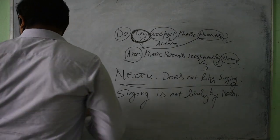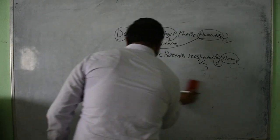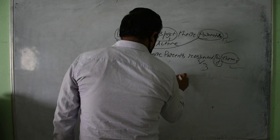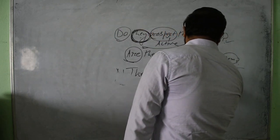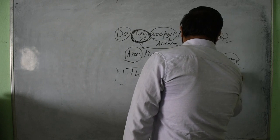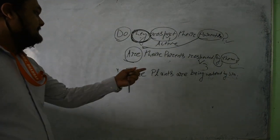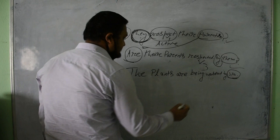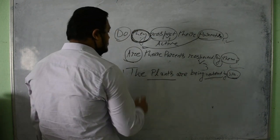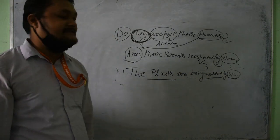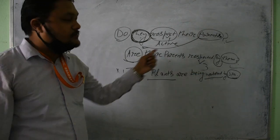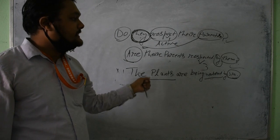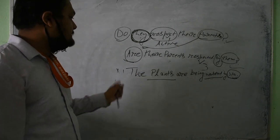Now changing passive to active. The question is: 'The plants are being watered by Sita.' Here you can see the doer of the work — Sita — comes after 'by.' The object 'plants' has become the subject. This is an obvious case of passive voice. Whenever the doer of the work comes after the thing being acted upon, it is a classic case of passive voice.